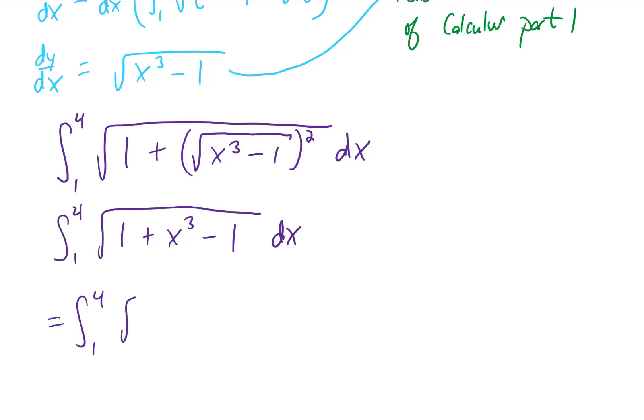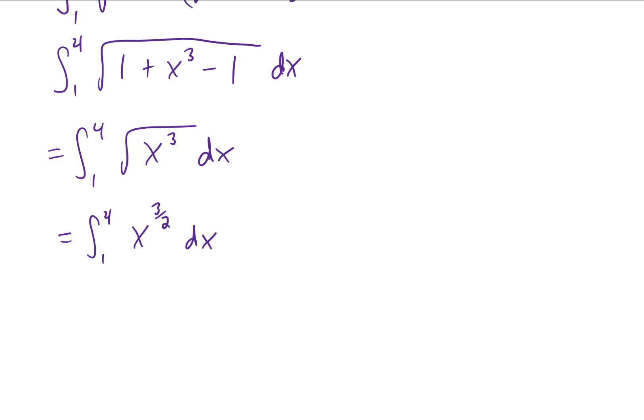This leaves us with an integral from one to four of the square root of x cubed, which can be written more simply as the integral from one to four of x to the three halves power.